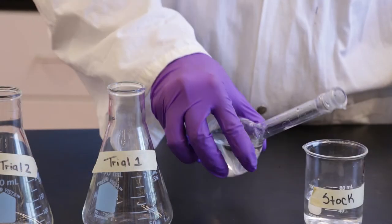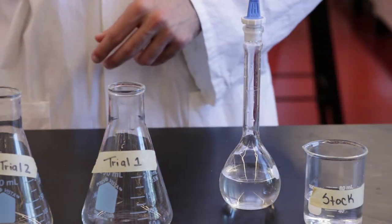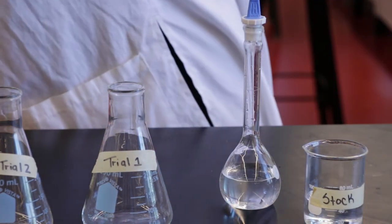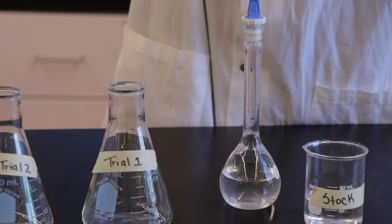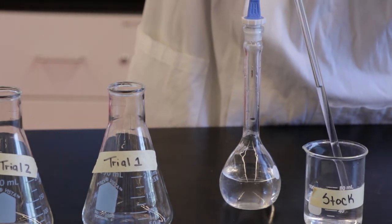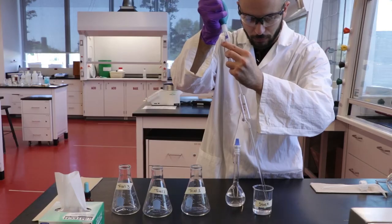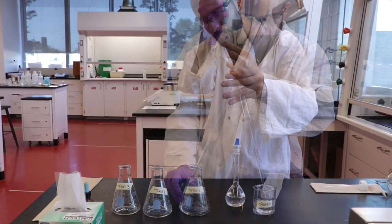Using a 25 milliliter volumetric pipette, transfer a 25 milliliter aliquot of the vinegar solution to a 125 milliliter Erlenmeyer flask. Remember that you should never pipette from the stock or a volumetric flask directly. Therefore, pour approximately 50 milliliters of the stock solution into a beaker before pipetting.